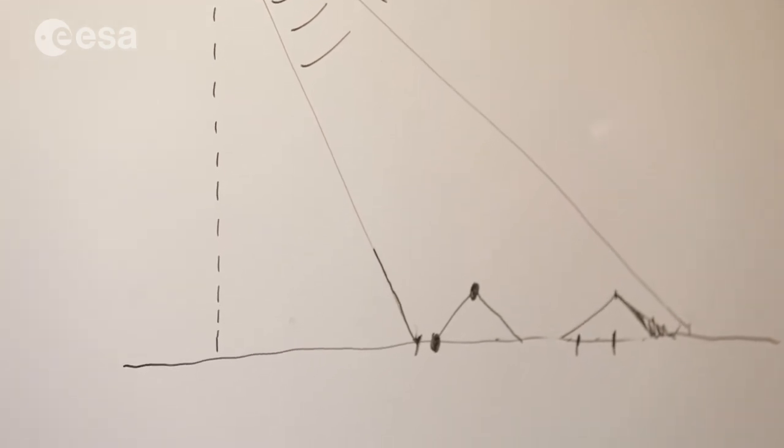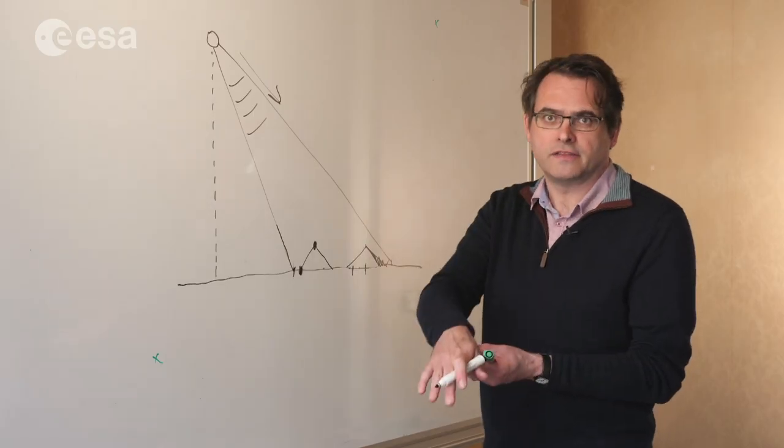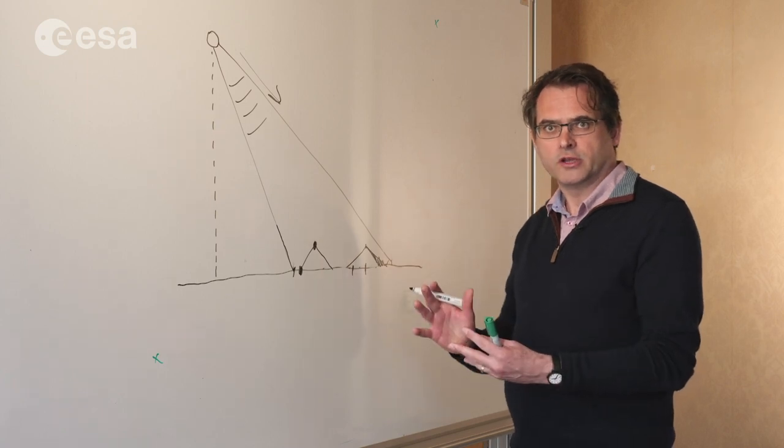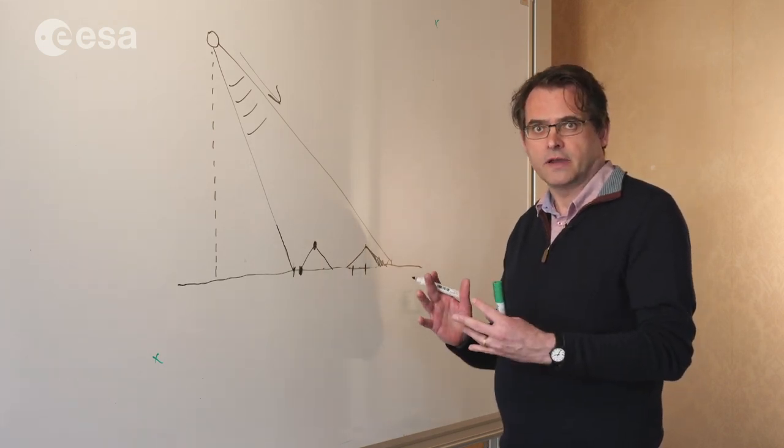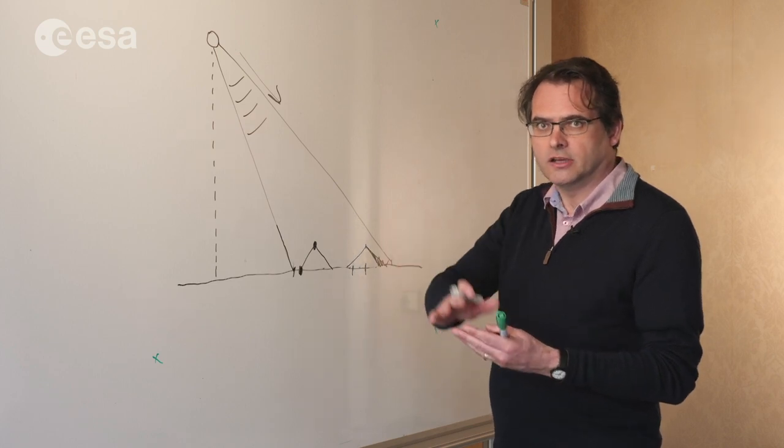Not only is it in the wrong place geographically, it's actually completely flipped over. This is what we call layover. Objects like steep mountains actually look like they're leaning over on themselves.